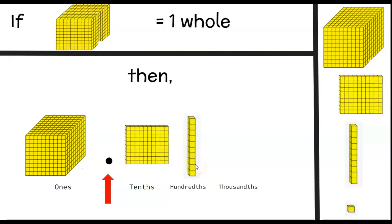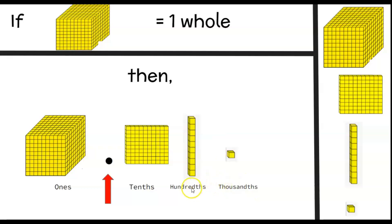Now we can use base 10 blocks to represent our thousandths place. We can say one thousandths block divided by one thousand gives me one, so I would use my ones cube. Or I can know that the thousandths place is ten times smaller than the hundredths place. The hundredths place is ten, so ten divided by ten gives me one. This is how we build a number if we use the thousandths block to represent one whole.